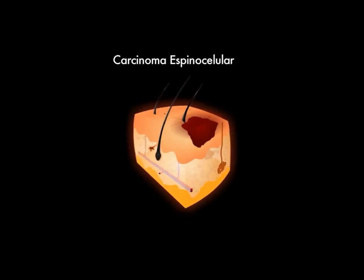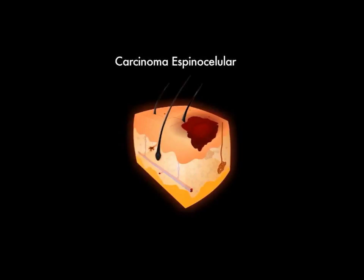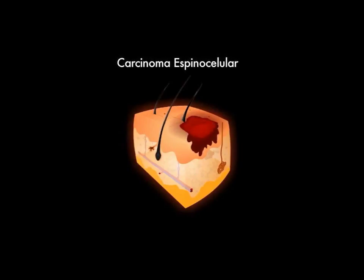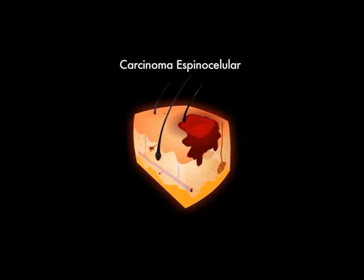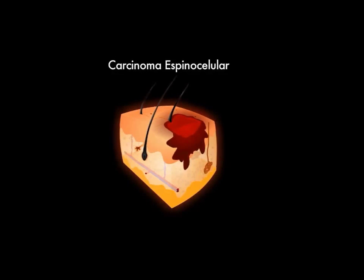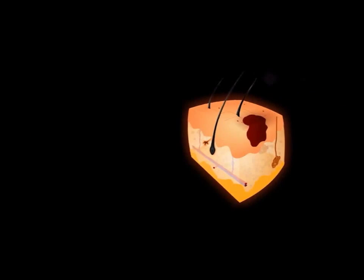Squamous cell carcinoma is a malignant tumor developed from epithelial cells. It is less common, representing 25% of cases, and can cause metastasis. It can occur in various organs, has a reddish and scaly appearance with a cauliflower-like aspect, and can be painful.